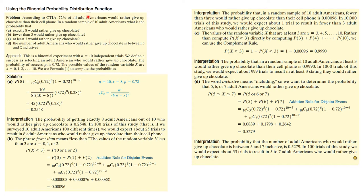We were given that 72% of all adult Americans would rather give up chocolate than their cell phones. In a random sample of 10 adult Americans, what's the probability that exactly 8 would give up their cell phones? Note that this is a binomial experiment. There are 10 independent trials and we'll define a success as an adult American who would rather give up chocolate than their cell phone, so P = 0.72.